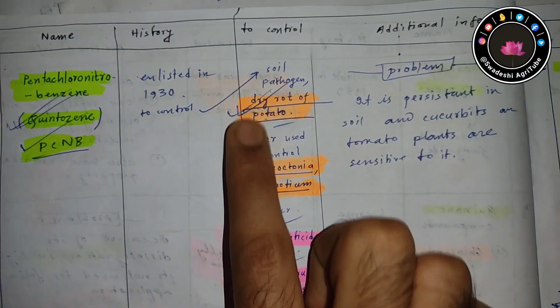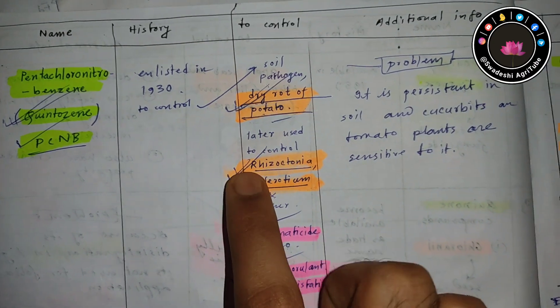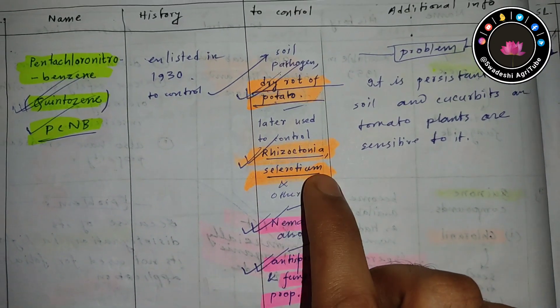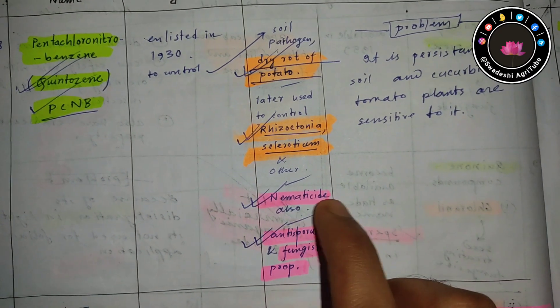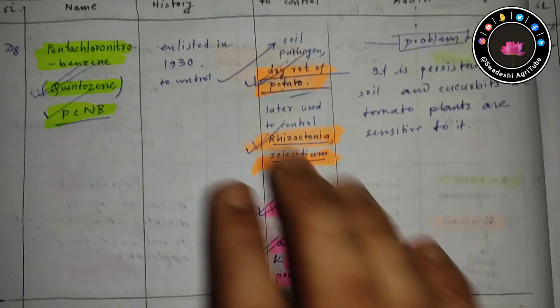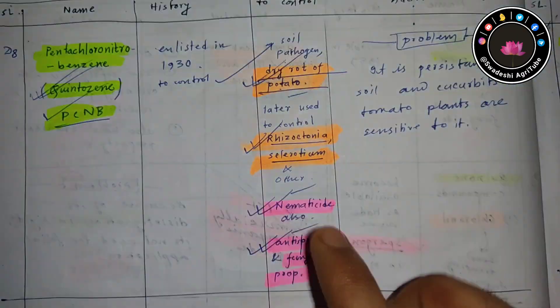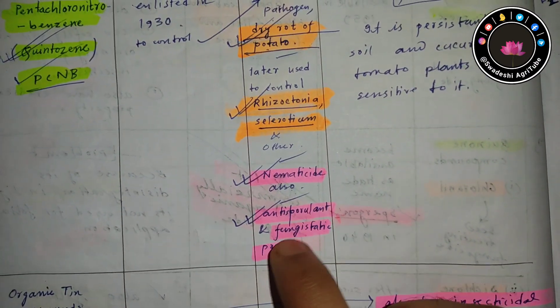Later it was also used to control Rhizoctonia and Sclerotia. It can also be used as a nematicide.